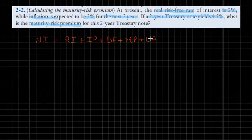Let's apply this formula to the security at hand, the 2-year Treasury note. This 2-year Treasury note has a 4.5% nominal interest rate, so I go ahead and plug that in. The real risk-free interest rate is also given in the problem as 2%.